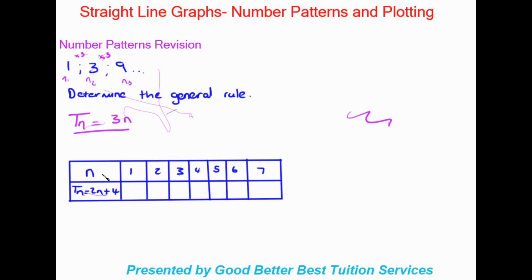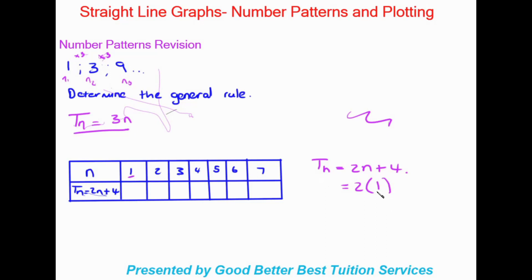Moving on to this table, we can see they give us N and all the different terms for N. What we need to do is figure out TN using the rule given: TN is equal to 2N plus 4. This is the rule we're going to use. The first row of numbers given is N, and to figure out TN we need to substitute each N value into this equation. So for N equals 1, we substitute 1 in place of N: 2 times 1 plus 4.